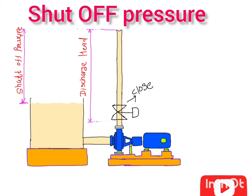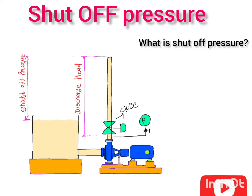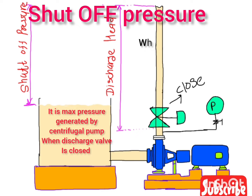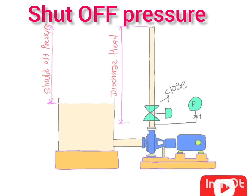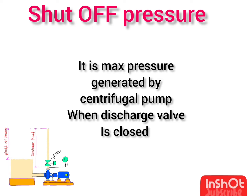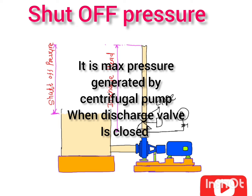So let's start with some basic information about shut-off pressure. Shut-off pressure is nothing but the maximum pressure that a centrifugal pump can generate when the discharge valve is closed — that is, when there is no flow passing through the pump.